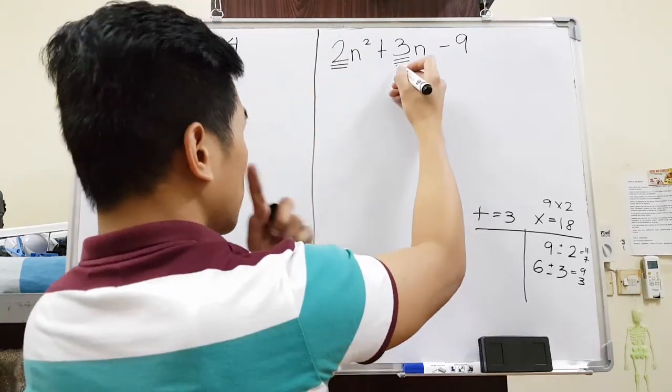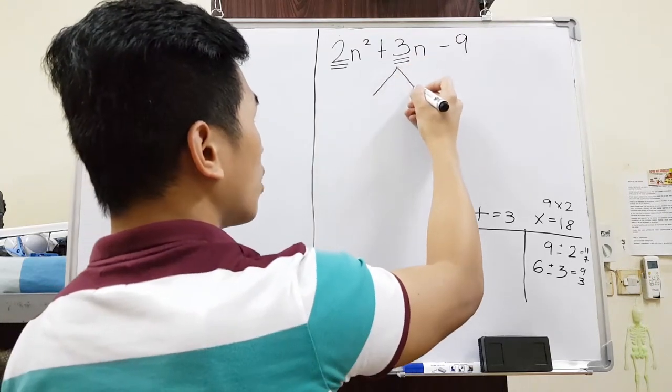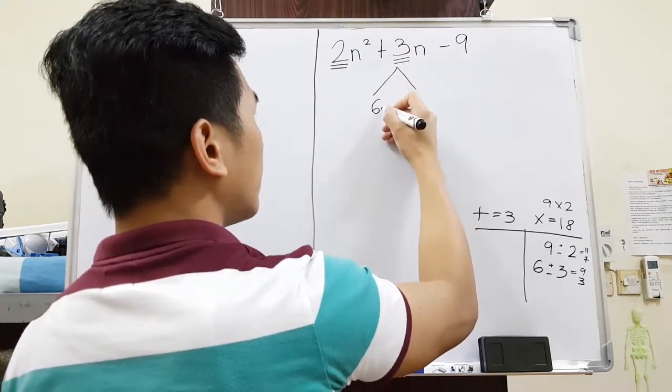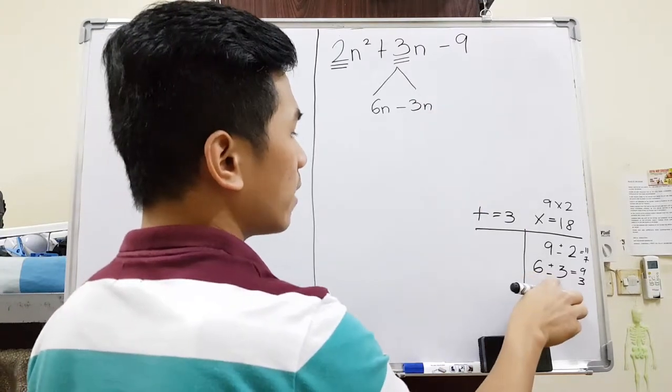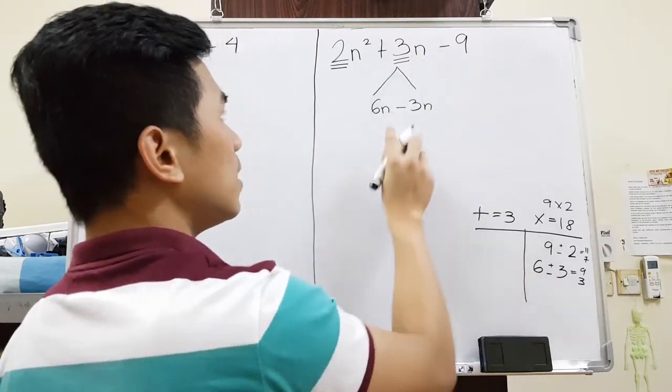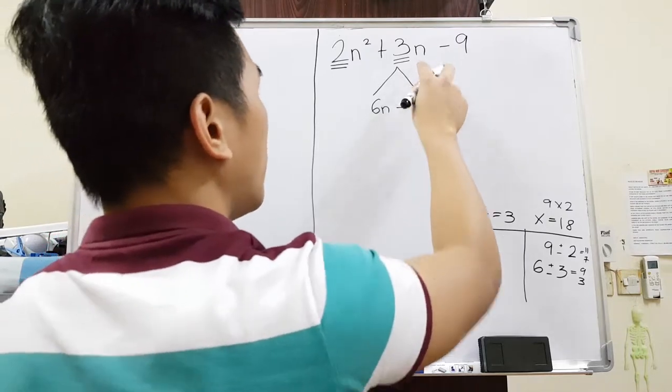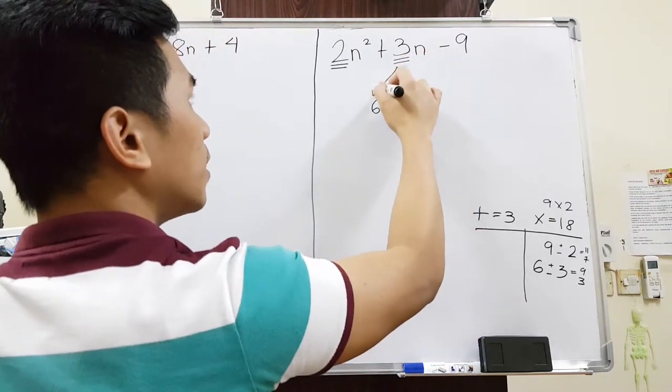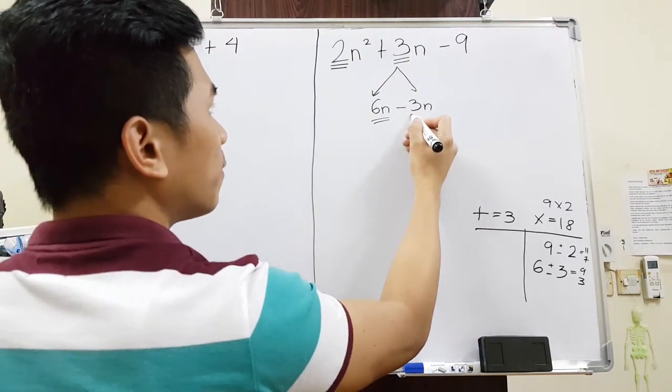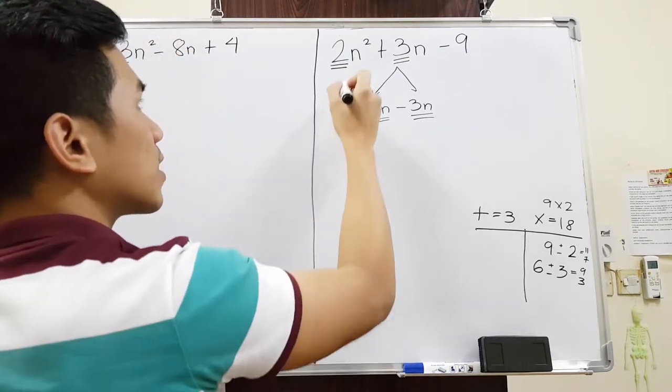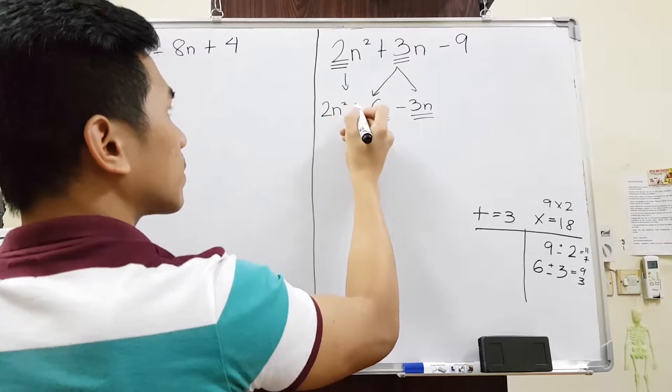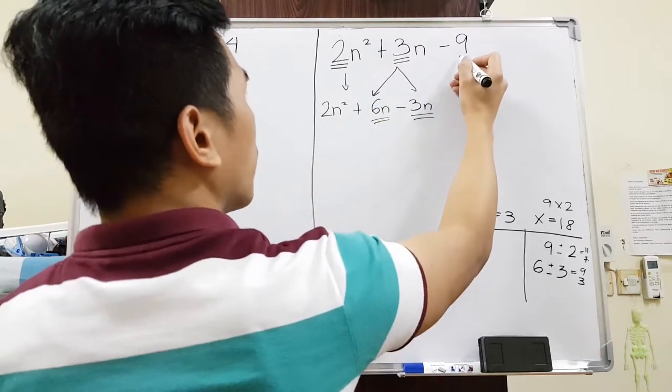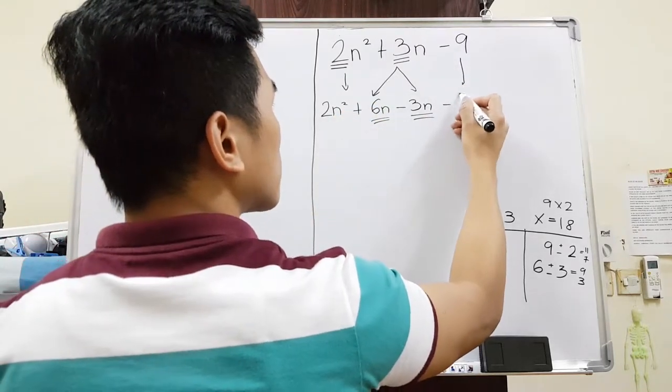So we just have to split this into two numbers. And that is going to be 6n minus 3n. Basically, 6 minus 3 over here. As you can see, 6 minus 3 is still 3n. We are just splitting this number in the middle into two different numbers. Next, we just have to copy the other. So 2n squared, plus, and then bring it down again, minus 9.